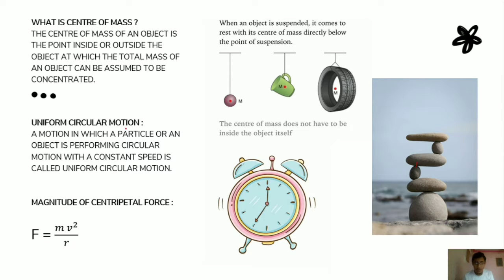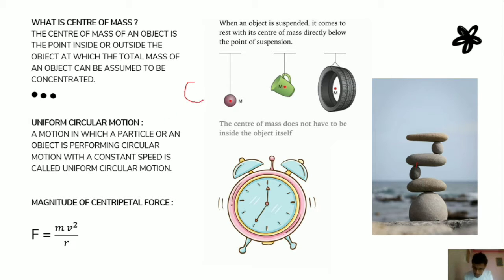Now we will see what is uniform circular motion. Motion is nothing but the change in position of a particle with respect to its surroundings. Circular motion is the motion of a particle or object performed along the circumference of a circle. When this is done at a constant speed, that motion is called uniform circular motion.